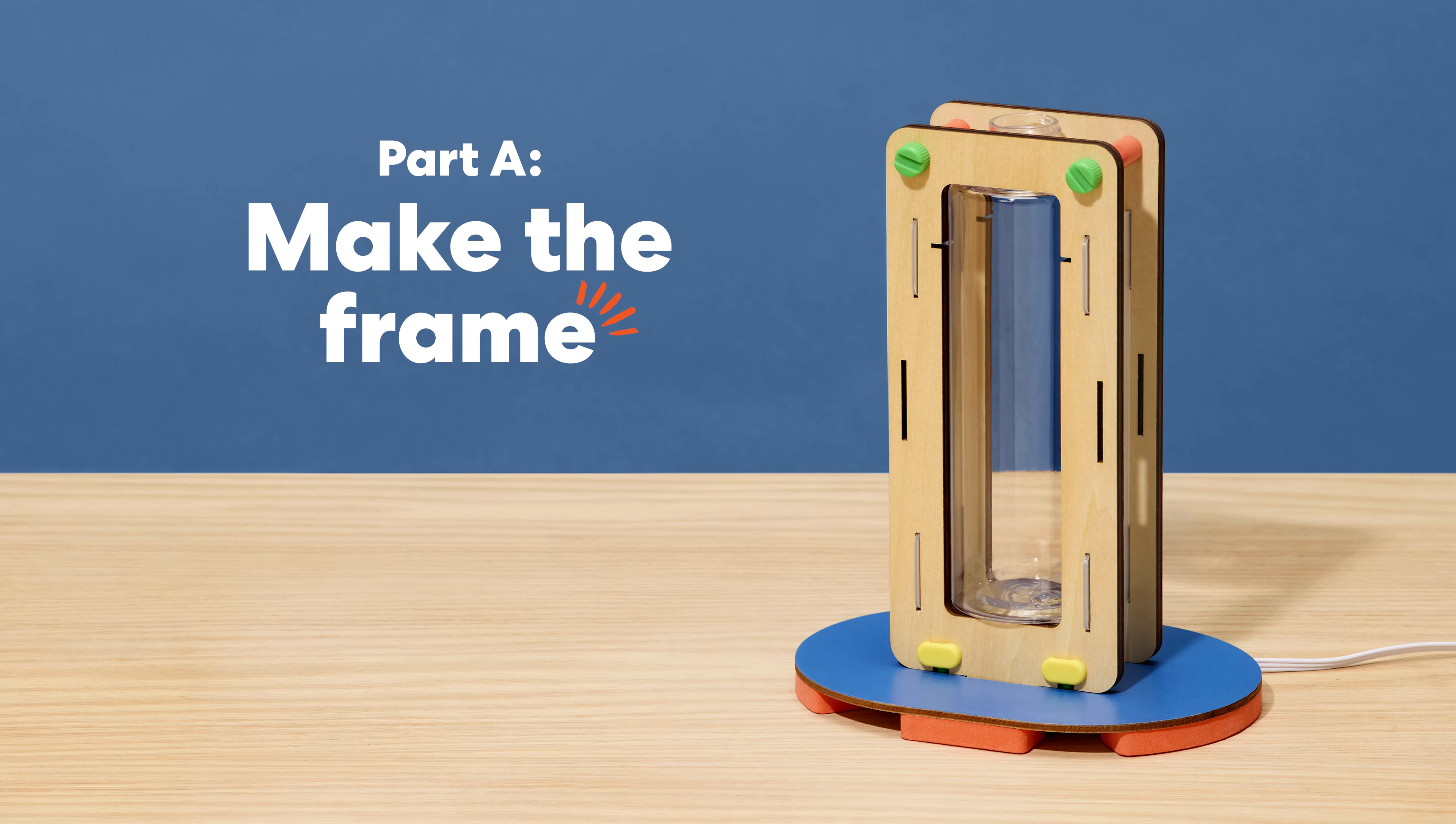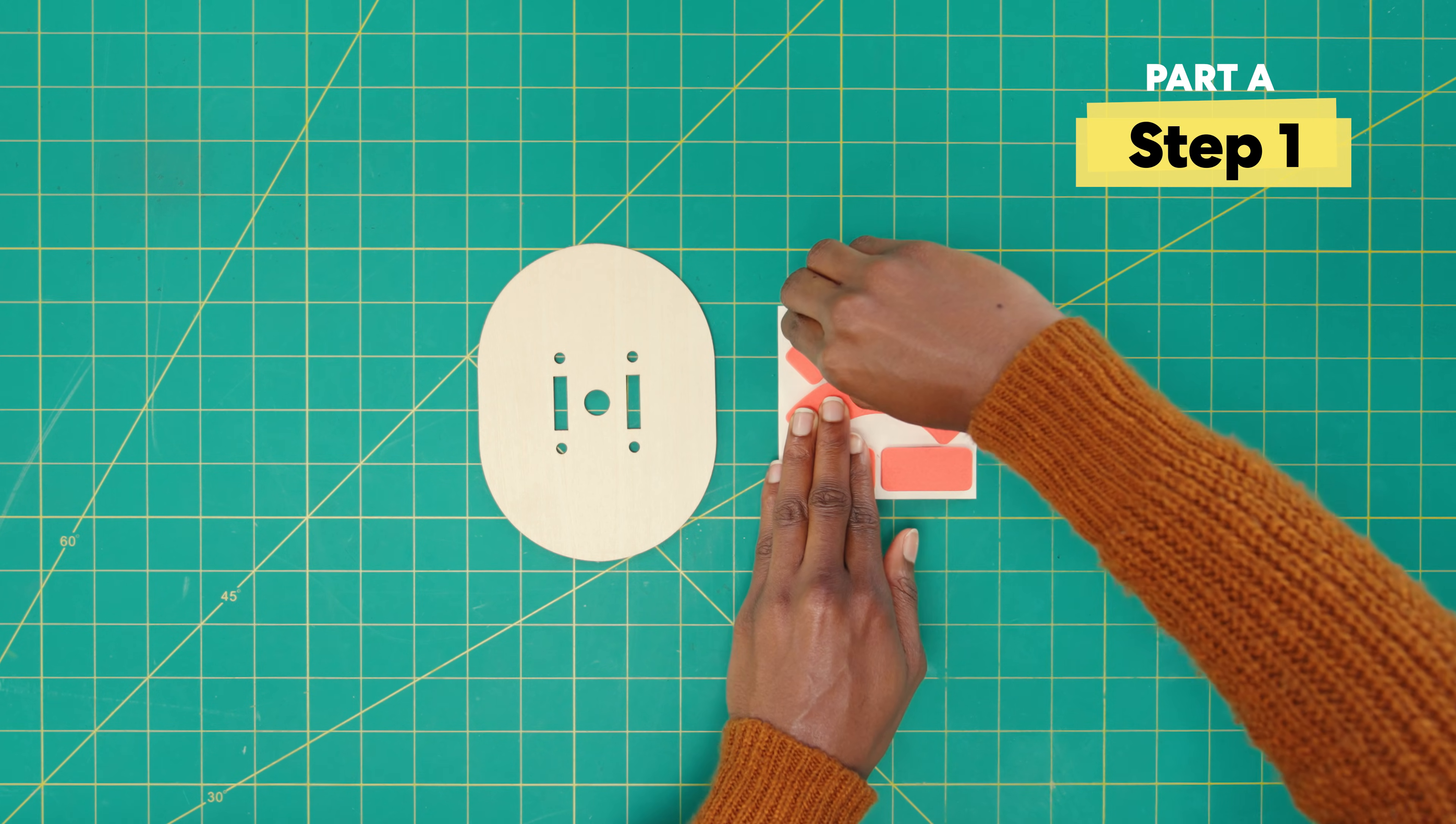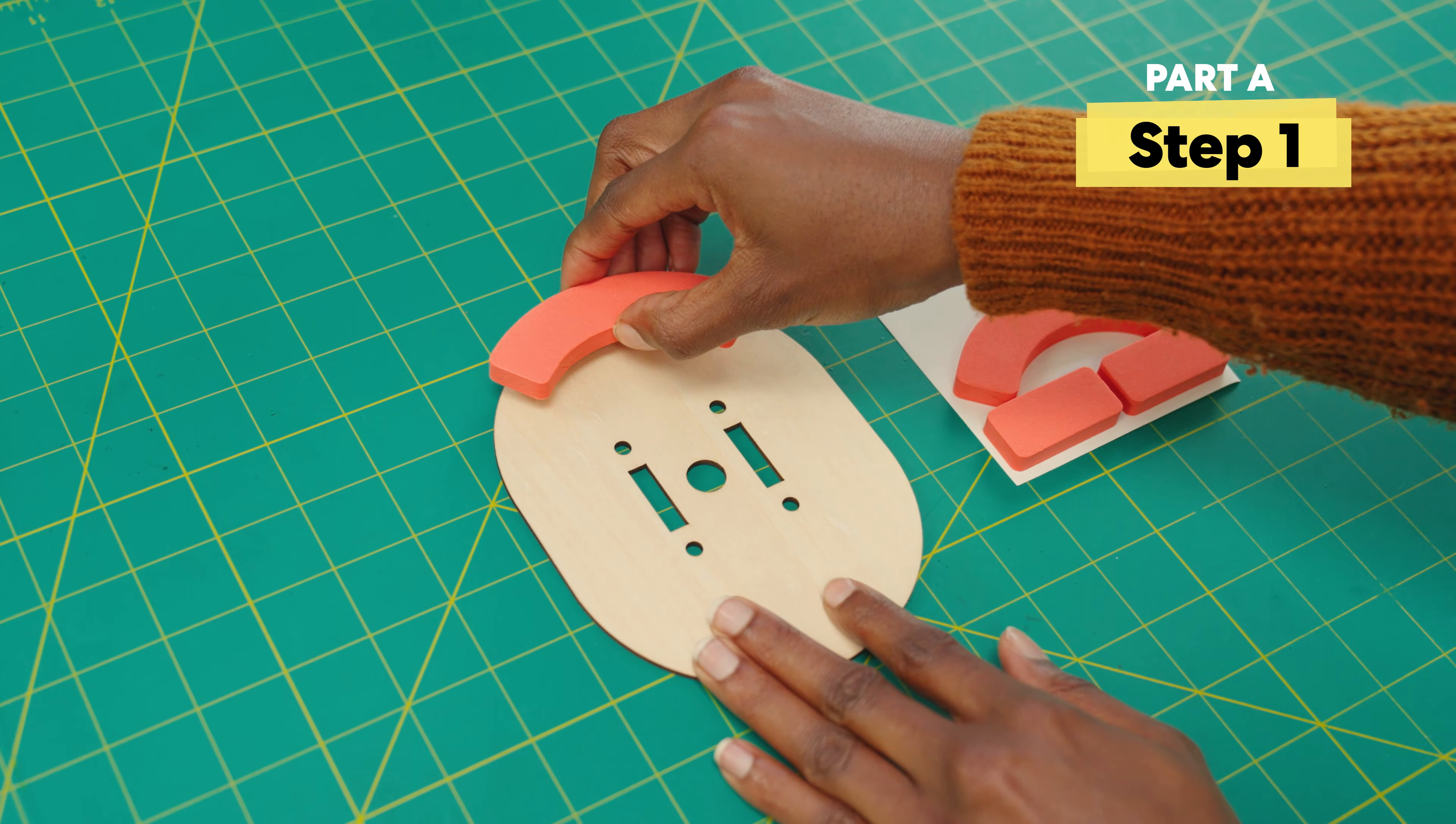Part A, let's make the frame. First, grab these foam pieces from your crate and stick them onto the lamp face.